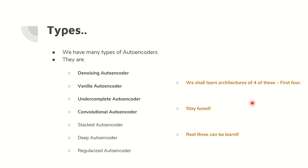We have multiple types of autoencoders available: denoising autoencoder, vanilla autoencoder, under complete, convolutional autoencoders, stacked autoencoder, deep autoencoder, and regularized autoencoder. I'm going to take the first four and explain them; the rest three you can learn by yourself. I'll also implement and build the convolutional autoencoder step by step.